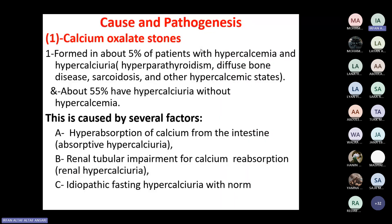Calcium oxalate stones are usually seen with hypercalciuria and hypercalcemia, though the majority of patients have hypercalciuria without hypercalcemia, and some are idiopathic. Causes include hyperabsorption of calcium from the intestine, renal tubular impairment for calcium reabsorption, or idiopathic fasting hypercalcemia with normal calcium metabolism.